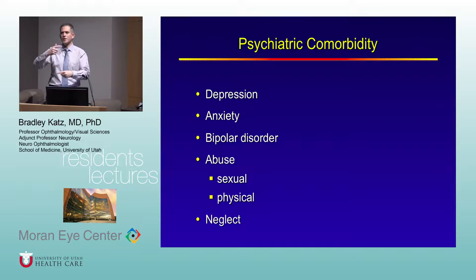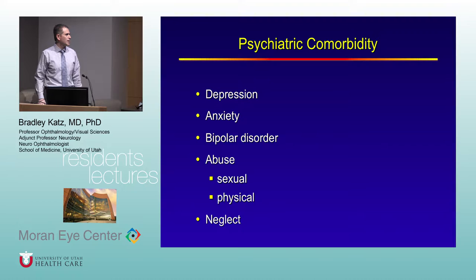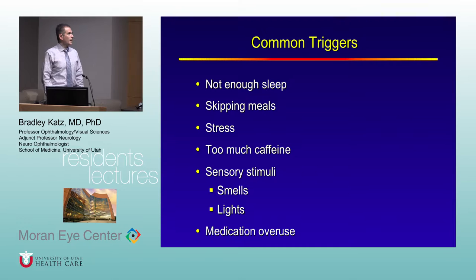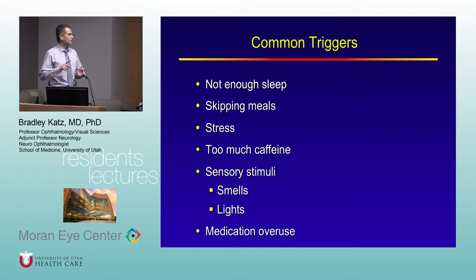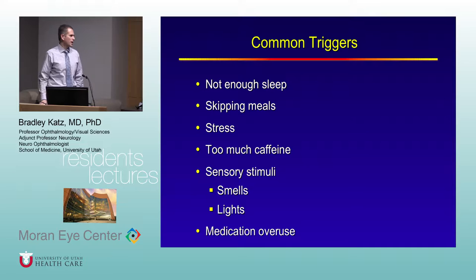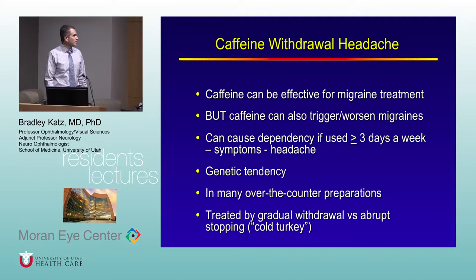Psychiatric comorbidities are very common with migraine in a vicious cycle — headaches worsen anxiety, anxiety worsens headaches. There is not infrequently a history of neglect or abuse in childhood, especially in women. Common triggers include not enough sleep, skipping meals, stress, too much caffeine, certain smells, fluorescent lights, and medication overuse. Many patients overuse over-the-counter analgesics like acetaminophen, naproxen, and ibuprofen, leading to medication overuse rebound headache.